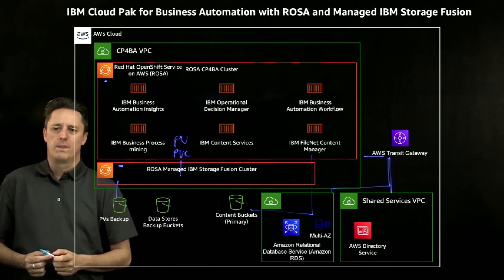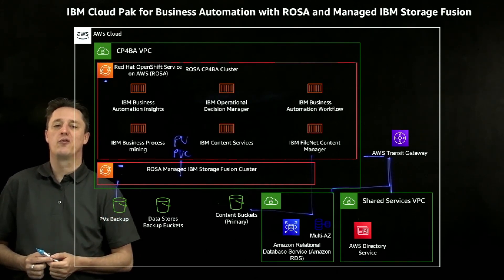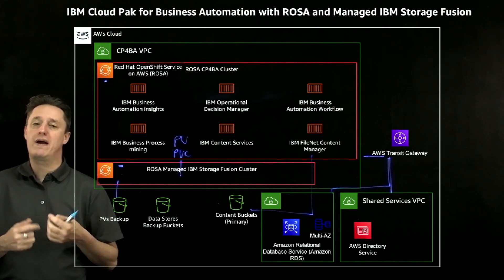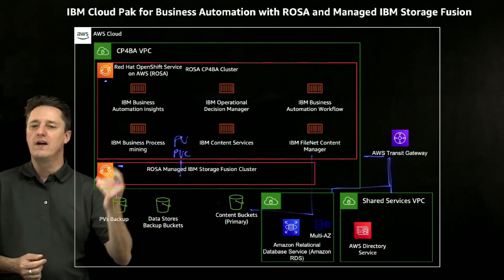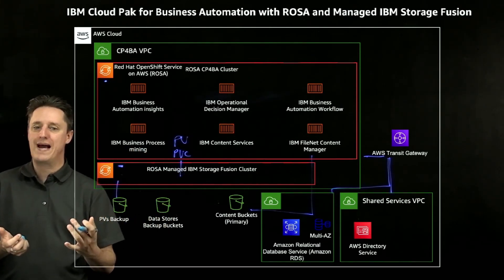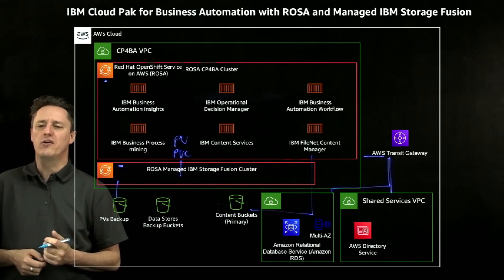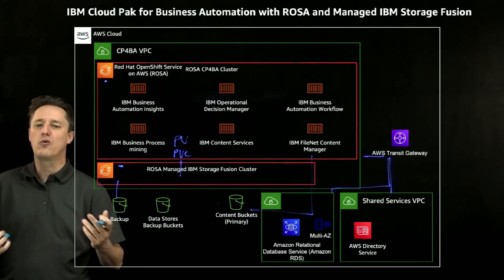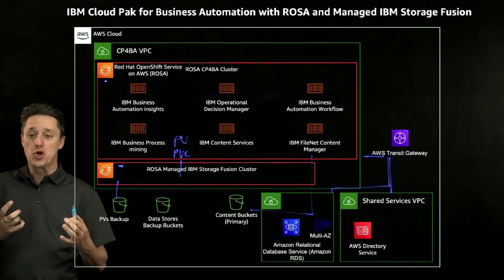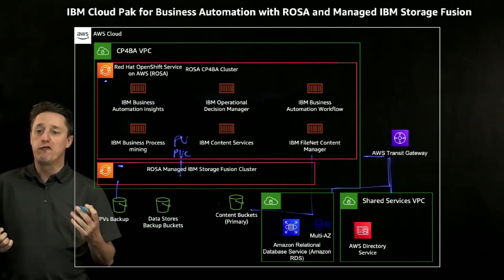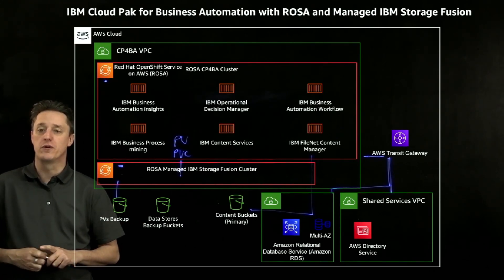All in all, there are three major building blocks facilitating IBM Cloud Pak for Business Automation on top of managed OpenShift using a managed version of IBM Storage Fusion: the ROSA cluster for the Cloud Pak itself, a relational database via RDS, S3, and then the common building blocks seen with most enterprise customers — a Transit Gateway to link everything together and a shared services infrastructure. That is essentially what is under the hood of IBM Cloud Pak for Business Automation on top of managed OpenShift using IBM Storage Fusion on AWS.